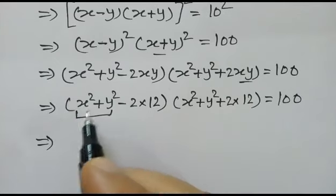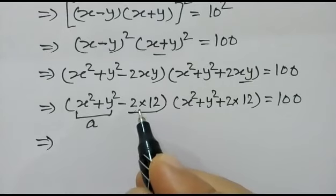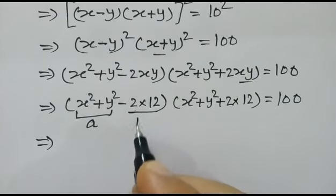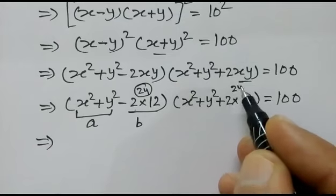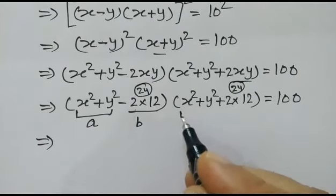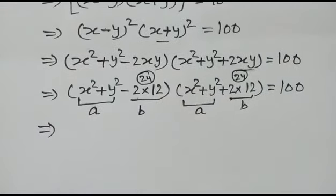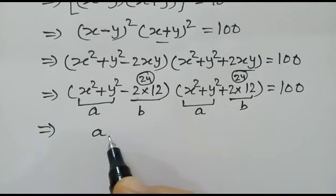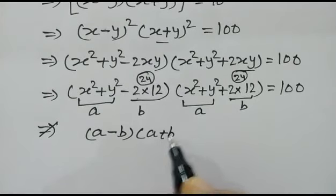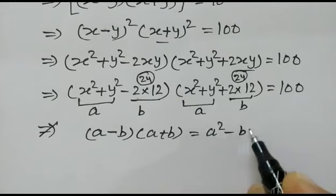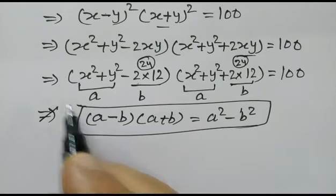Now if we let a equal x squared plus y squared and b equal 24, we can write (a minus b)(a plus b) equals a squared minus b squared, so (x squared plus y squared) squared minus 24 squared equals 100.